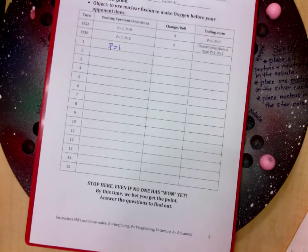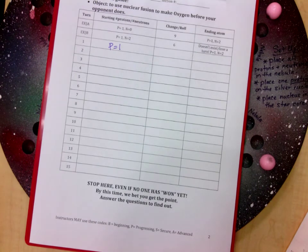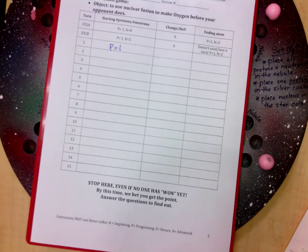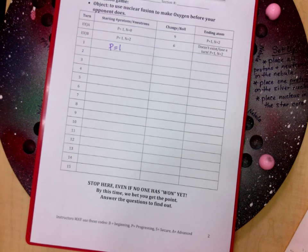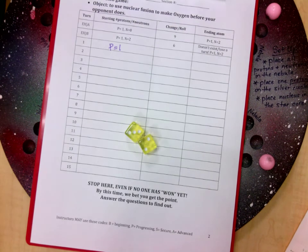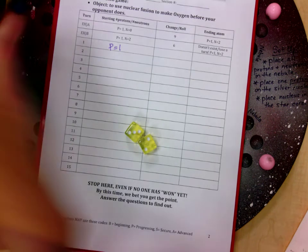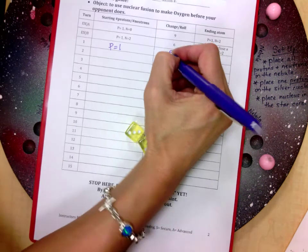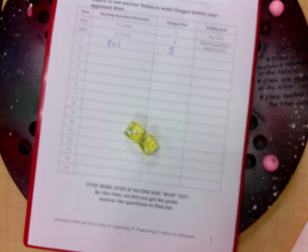So on my recording sheet I would go ahead and write down that I have one proton. I'm gonna go ahead and roll my dice and as I roll my dice I'm going to get a number. Let's say it's five. Okay so this time I rolled a five. So I would write down my roll so that way if I find an error later I can go back and fix it.